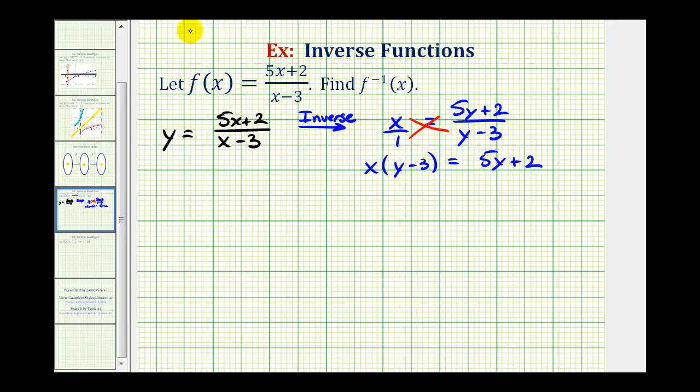Let's go ahead and clear these parentheses. So we'll distribute here. We have xy minus three x equals five y plus two.